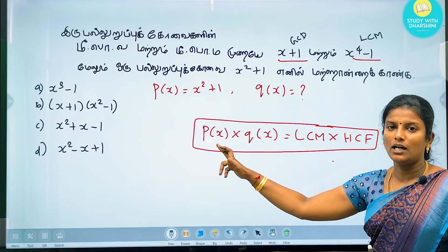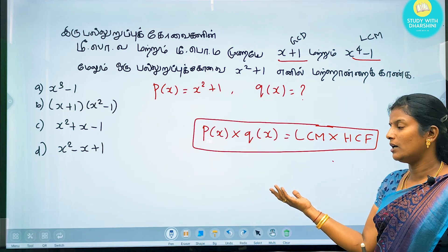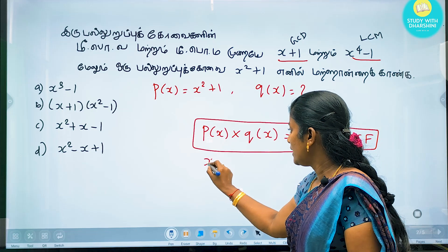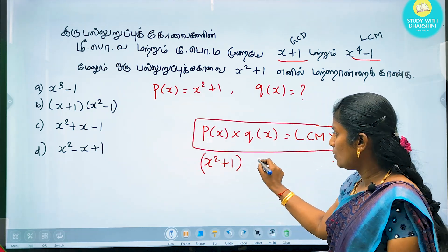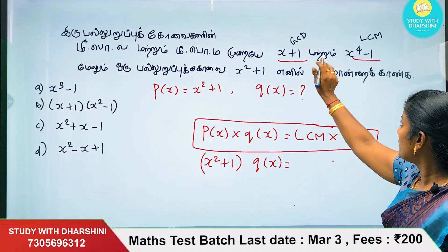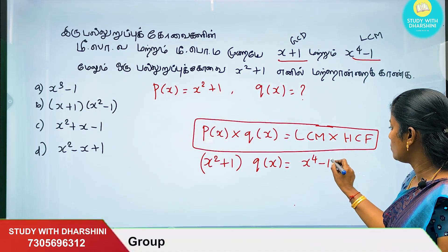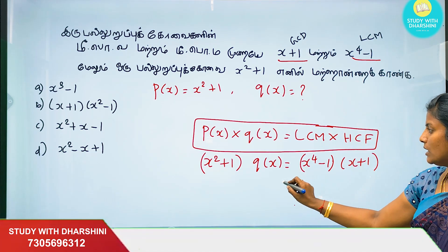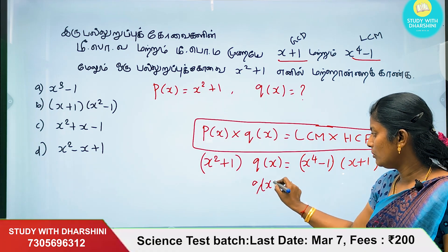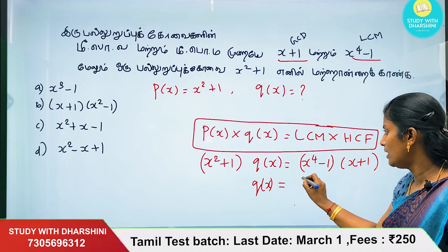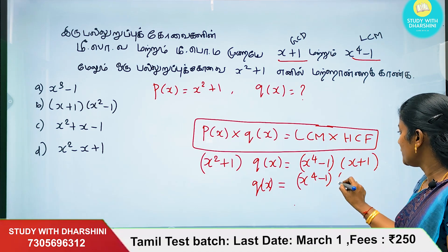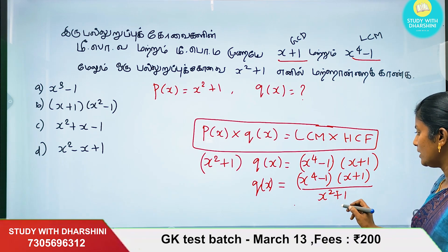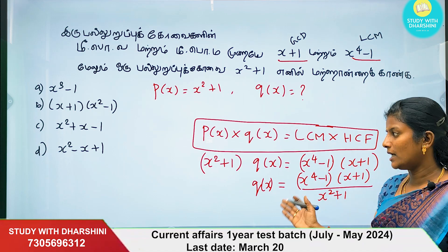The product of two polynomials equals the product of LCM and HCF. We have p(x) and q(x). P(x) is x² + 1, LCM is x⁴ - 1, and HCF is x + 1. We can solve for q(x) using: q(x) = LCM × HCF divided by p(x), which gives us (x⁴ - 1)(x + 1) divided by (x² + 1).